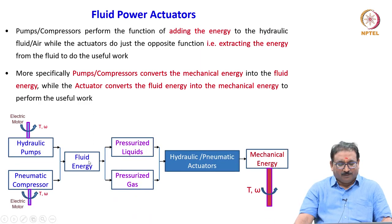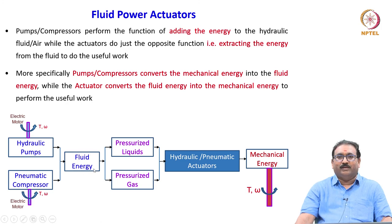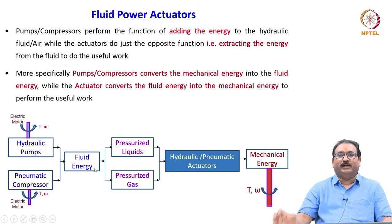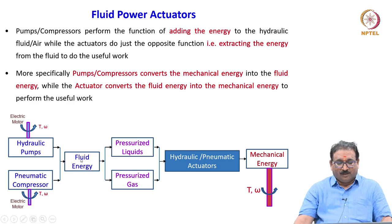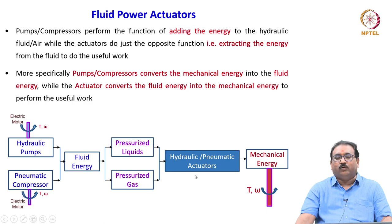A simple block diagram shows hydraulic pumps and pneumatic compressors driven by electric motors — receiving torque and angular velocity to produce fluid energy. The resistance to flow creates the fluid pressure. This fluid energy — either pressurized liquid or pressurized gas — is then the input to the hydraulic or pneumatic actuator, which converts it into mechanical energy.